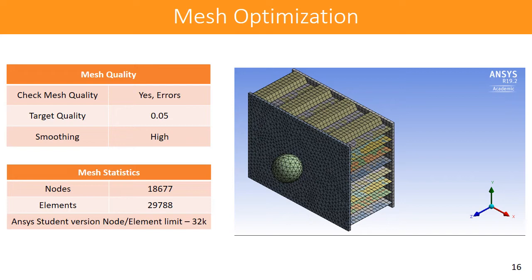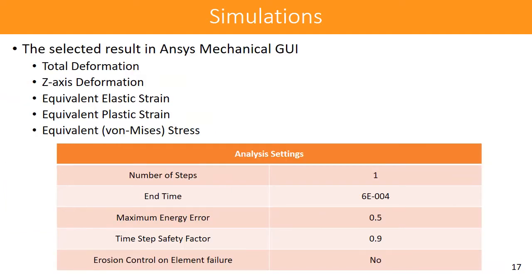It is worth noting that the ANSYS Student Version has a node/element limit of 32,000, leaving very little room to maneuver with mesh settings, so these counts were finalized accordingly. For the simulation, I added total deformation, Z-axis deformation, equivalent elastic strain, equivalent plastic strain, and equivalent von Mises stress. The analysis was run in one step with maximum energy set to 0.5 and time step safety factor to 0.9 to achieve convergence. No element failure was added.